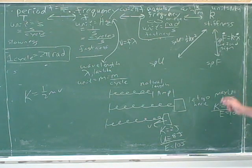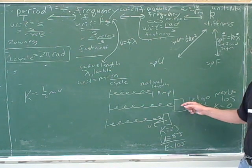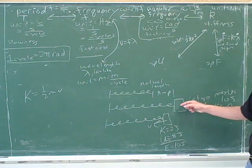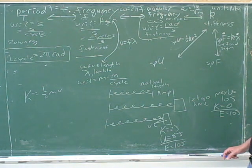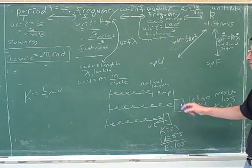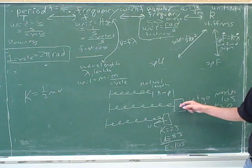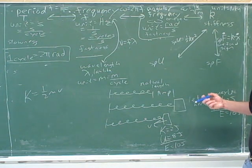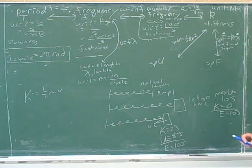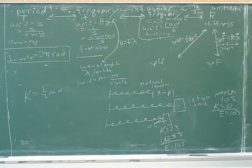So the maximum potential energy is at maximum expansion or maximum compression. Those are the points where we didn't have to put any energy into kinetic energy — because when you're at maximum expansion or compression, you're not moving, either because we just let go or because you're changing direction there. So this must be the point with the maximum potential energy.